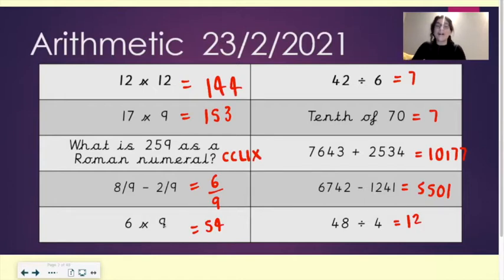Your answers: 12 times 12 equals 144, 17 times 9 equals 153, what is 259 as a Roman numeral? CCLIX. 8 ninths take away 2 ninths equals 6 ninths. 6 times 9 equals 54, 42 divided by 6 equals 7, tenth of 70 equals 7, 7,643 plus 2,534 equals 10,177. 6,742 take away 1,241 equals 5,501. 48 divided by 4 equals 12.